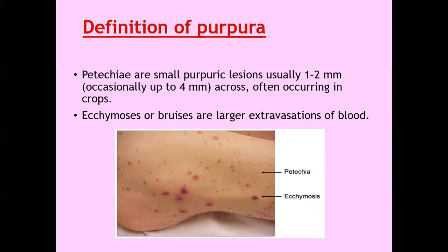Definition of purpura. There are two kinds of purpuric lesions. Petechiae, which are the small purpuric lesions, usually one to two millimeters and occasionally four millimeters across, that often occur in crops. Then larger purpuric lesions are called ecchymosis or bruises, which are larger than four millimeters and comprise large extravasation of blood. In this picture, you can see the small pinpoint purpuric lesions called petechiae and the larger purpuric lesions called ecchymosis.